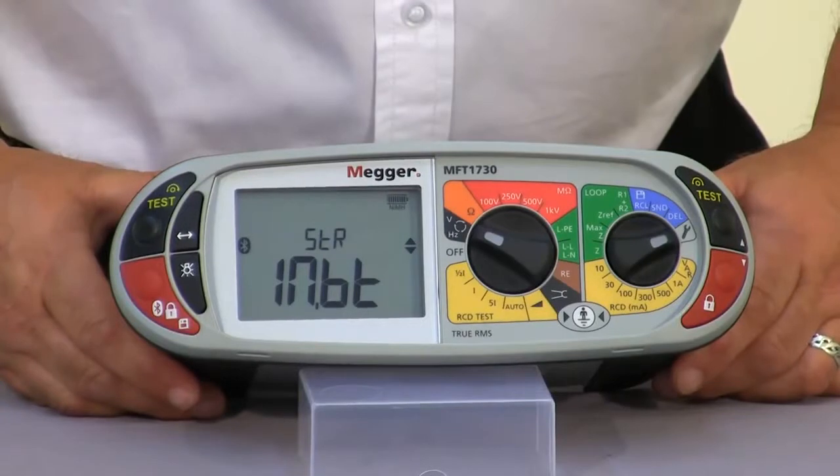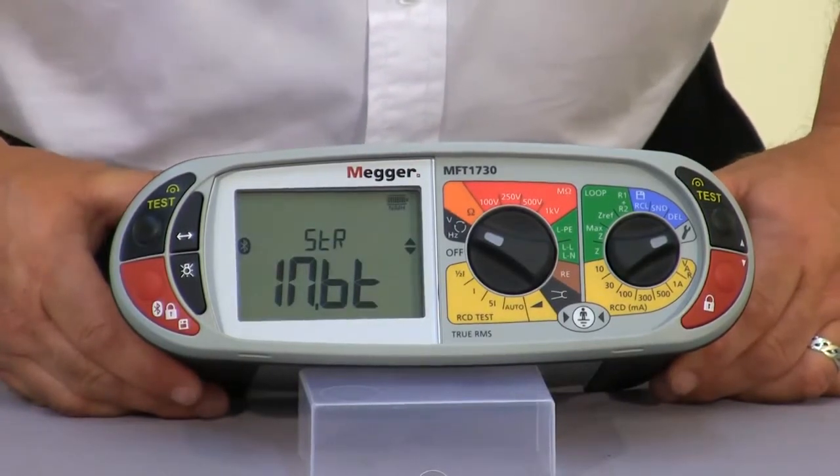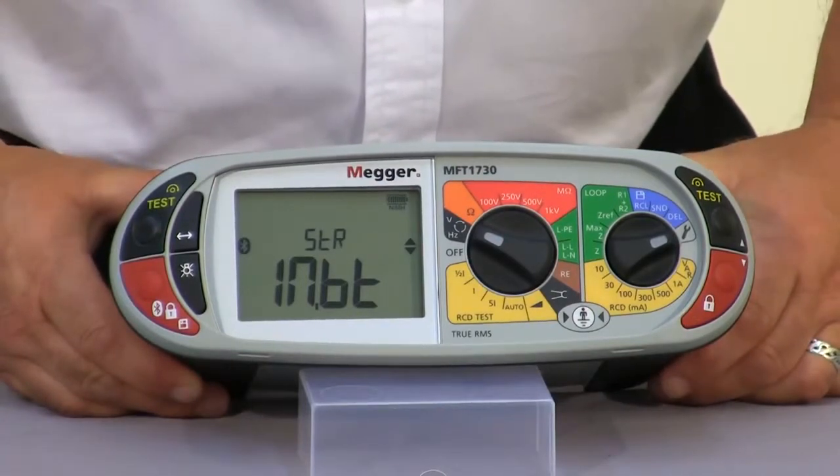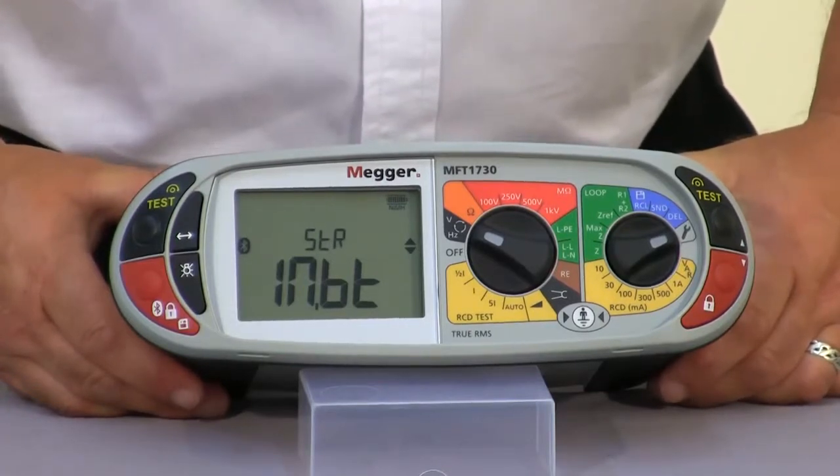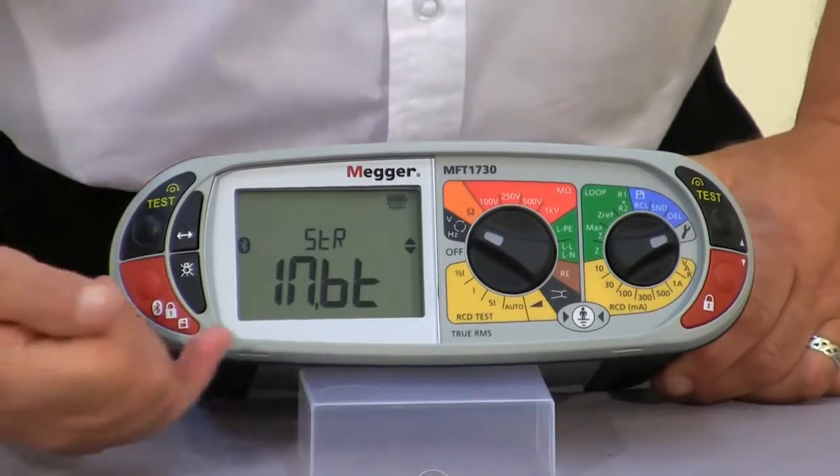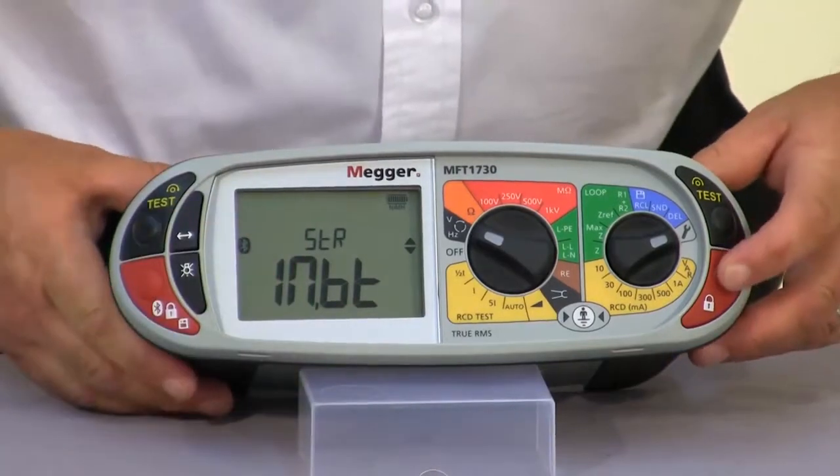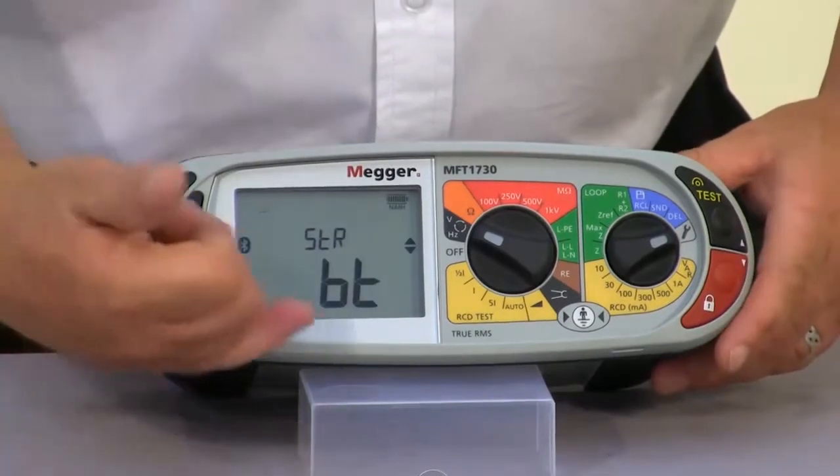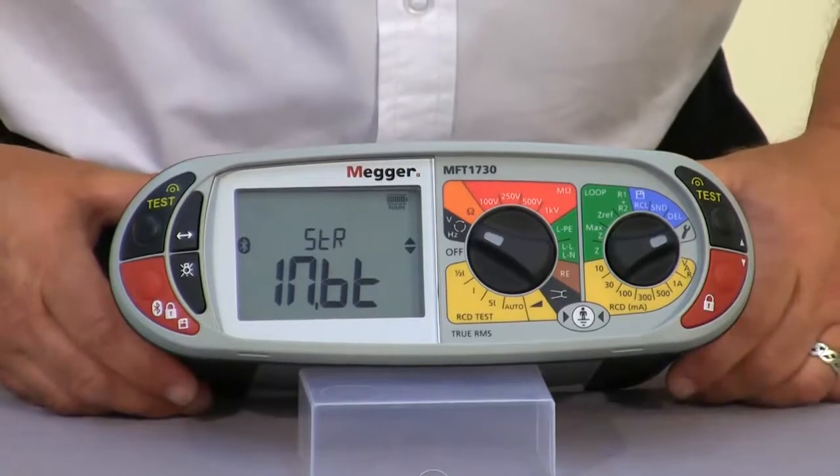We then have the storage facility. Because the 1730 can store up to 1,000 results internally, we can also ask it to send the results instantaneously via the Bluetooth straight into our PowerSuite software. The options here are basically internal and the Bluetooth out. You can see we can have just the internal storage memory, we can just select the Bluetooth individual results, or we can select both.